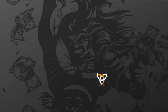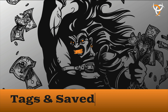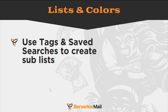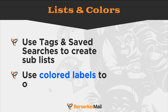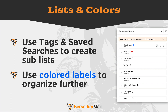In this quick training, we're going to talk all about tags, save searches, and colored labels, and how we can use them inside of the platform to organize your contacts and lists of emails. Berserker Mail uses tags to create different segments of your contacts, and you can assign as many tags as you want. It's an unlimited setup, and you have the ability to use those tags to create different sub-lists that you want to email to.